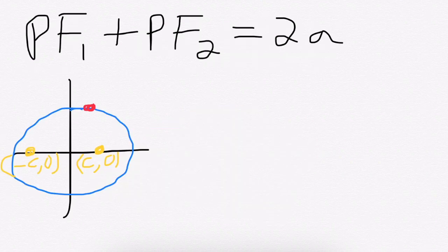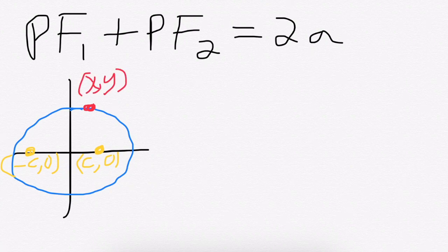With this setup, knowing that our distance from the origin or the center to each focal point is c, we have two focal points, negative c, 0 and c, 0. If we pick any random point on this ellipse, which we'll call x, y, the distance from x, y to this first focus plus the distance from x, y to the second focus should be equal to 2a.